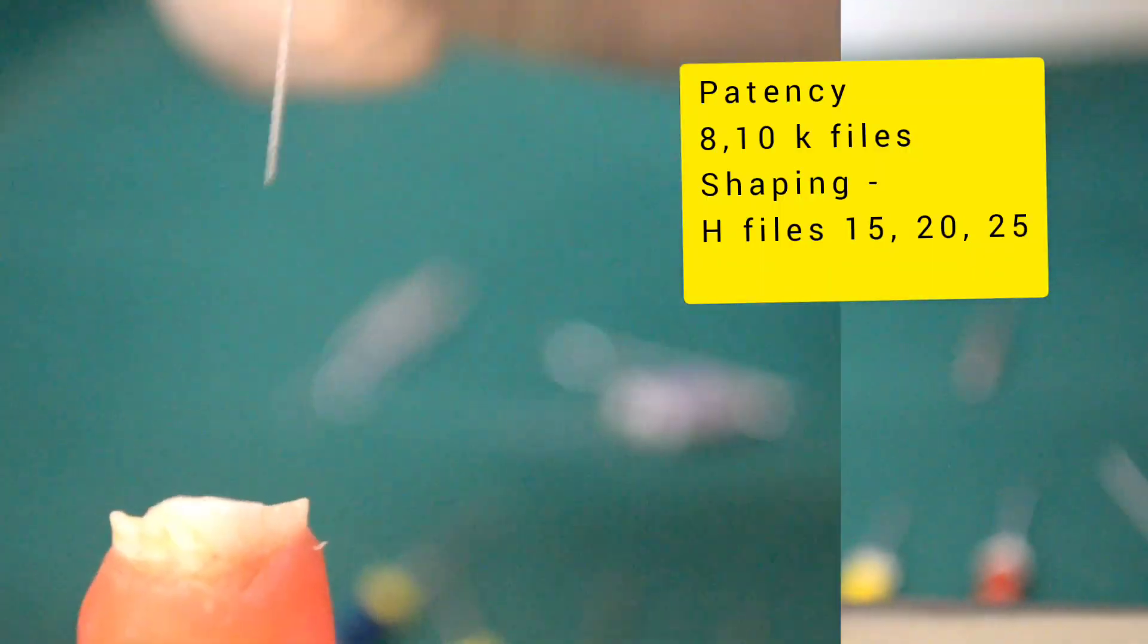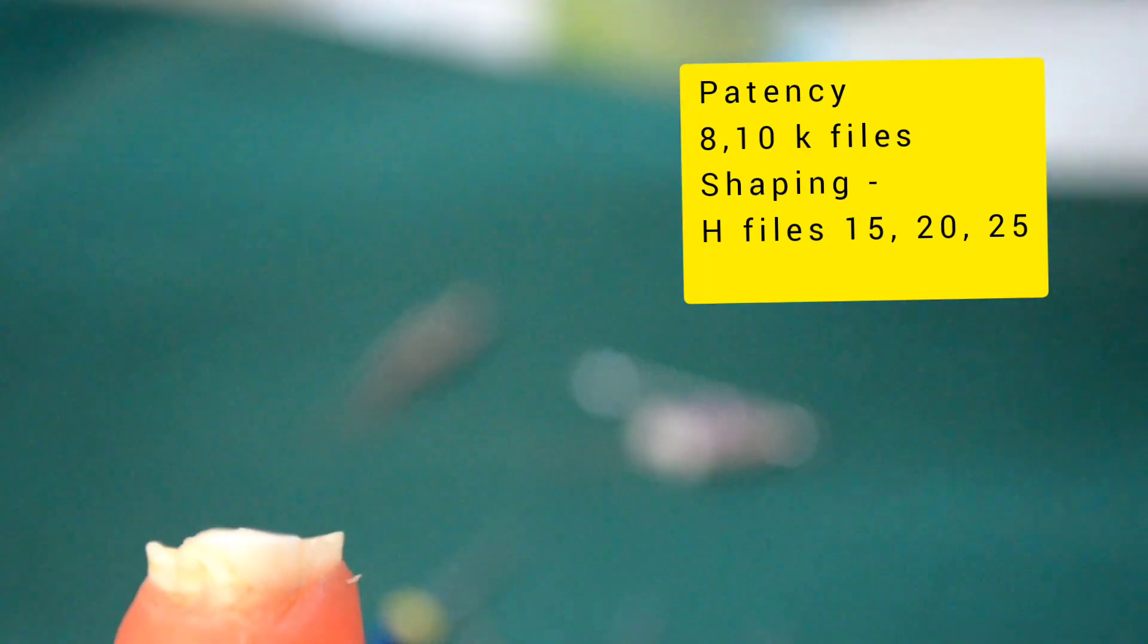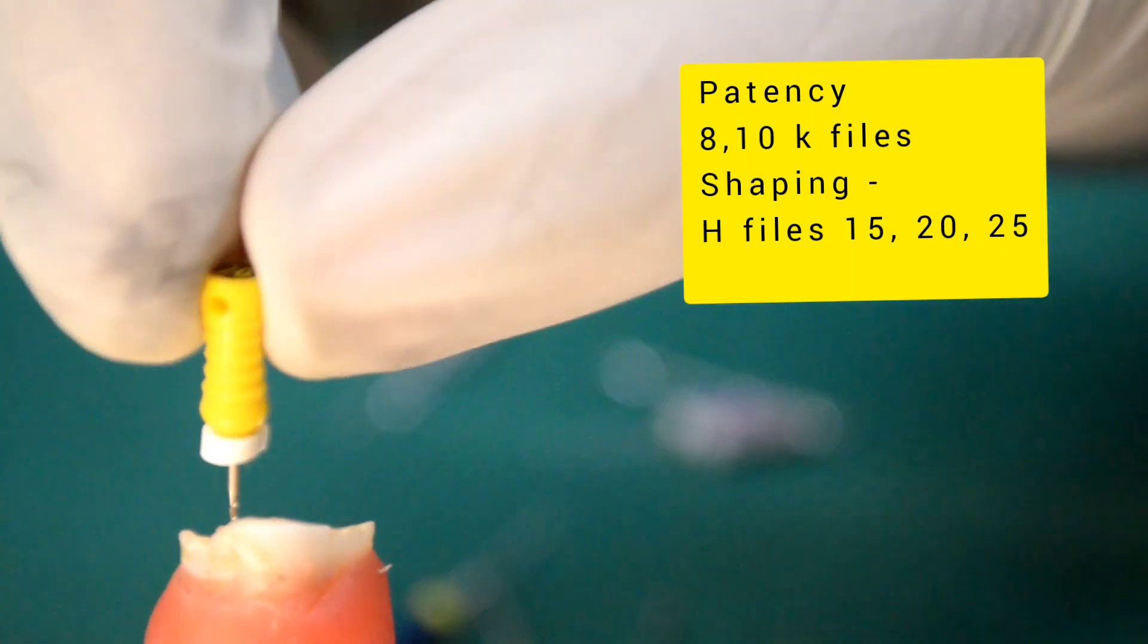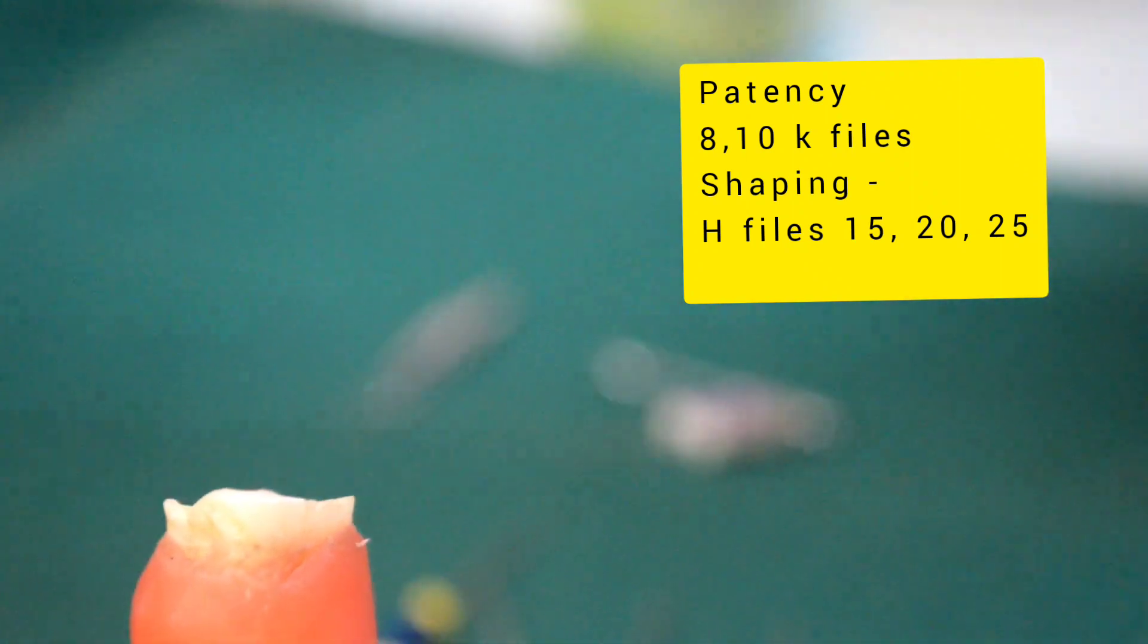The next step involves the preparation of the coronal two-thirds of the canal using hedge files of size number 15, 20, and 25 to a working length depth of 16 to 18 millimeters or to the point where the file starts binding.